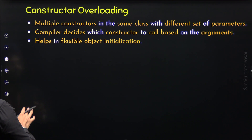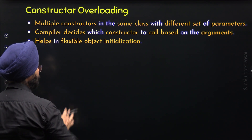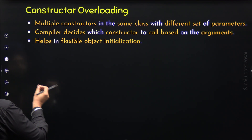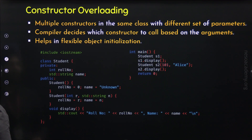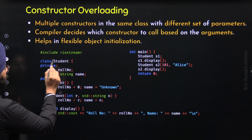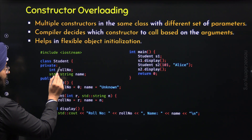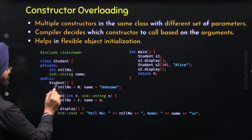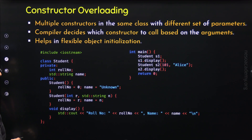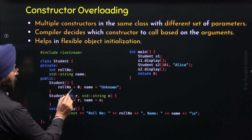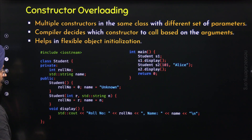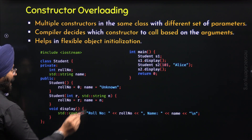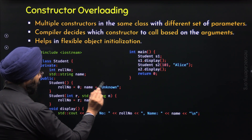Now let's properly understand how we can overload constructors in C++ with the help of a C++ program. Here is the program. I have defined the class Student with private members: role number and name. These are public member functions. Here you can observe we have the default constructor, and through this default constructor we are providing default values — role number will receive 0 and name will receive the string "unknown".